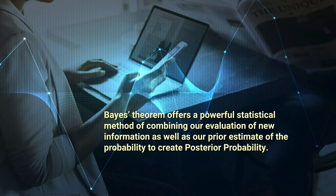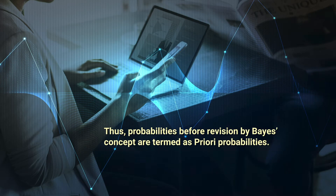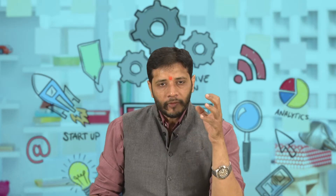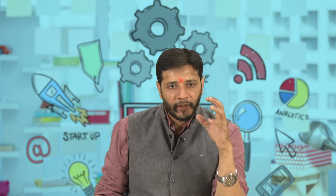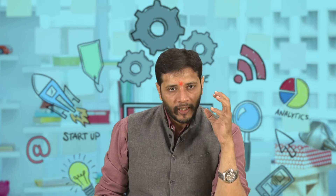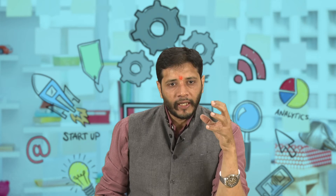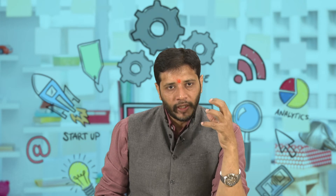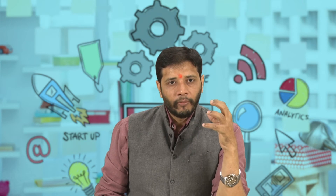Probabilities before revision by Bayes' concepts are termed priori probabilities. Probabilities which have undergone revision in light of additional information by Bayes' rules are termed posterior probabilities or revised probabilities, which can be altered after additional information is gathered. We will elaborate on these two terms with examples and pictorial presentations so learners get a clear view of the distinction between priori and posterior.